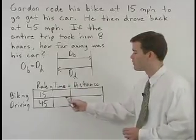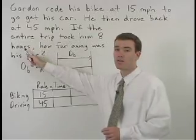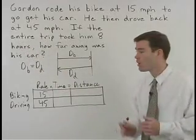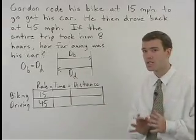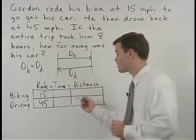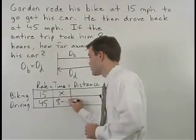Be careful with the time column. We know that his total time is 8 hours. But we don't know how long he spent biking and how long he spent driving. But since the total is 8 hours, we can represent the parts as x and 8 minus x.